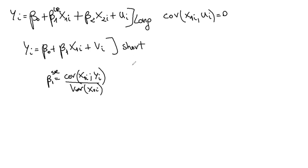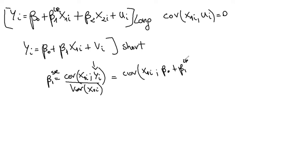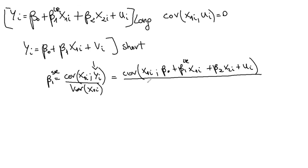To see what's going on, let's plug in the long regression — the true relationship between y and the x's — right here. So beta 1 from the short regression is the covariance between x1 and (beta 0 + beta 1 long × x1i + beta 2 × x2i + ui), all divided by the variance of x1.